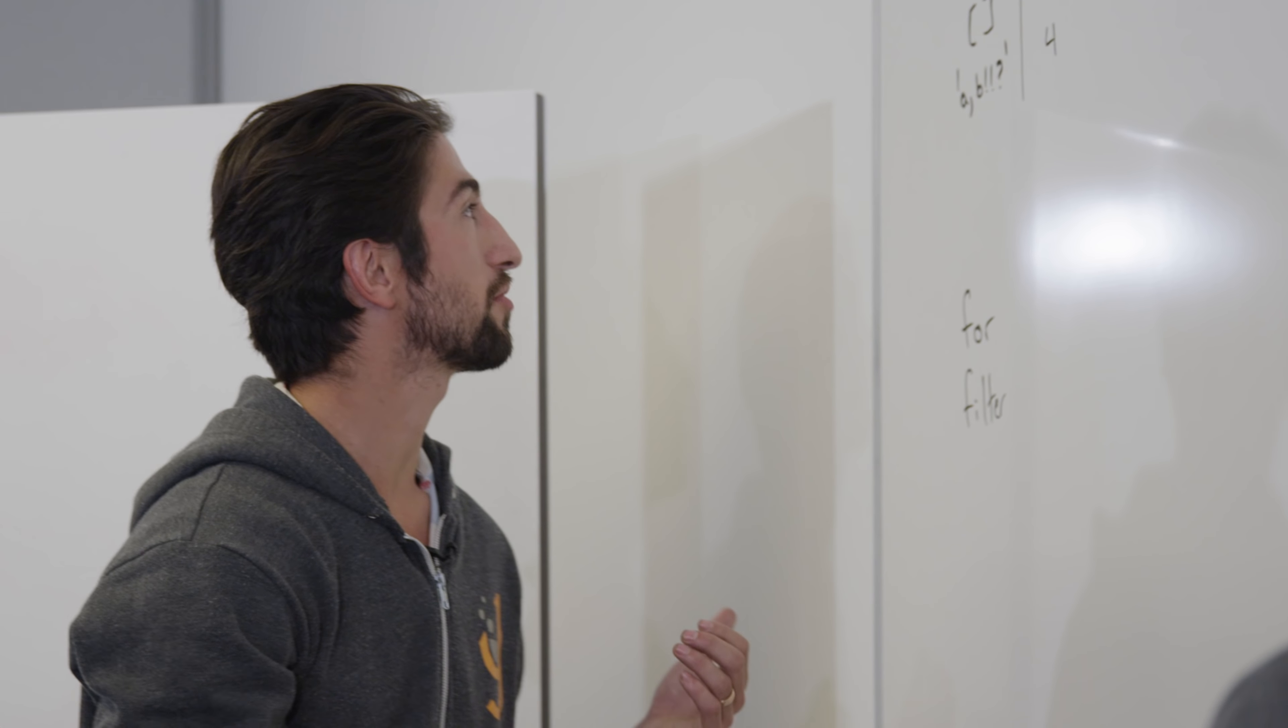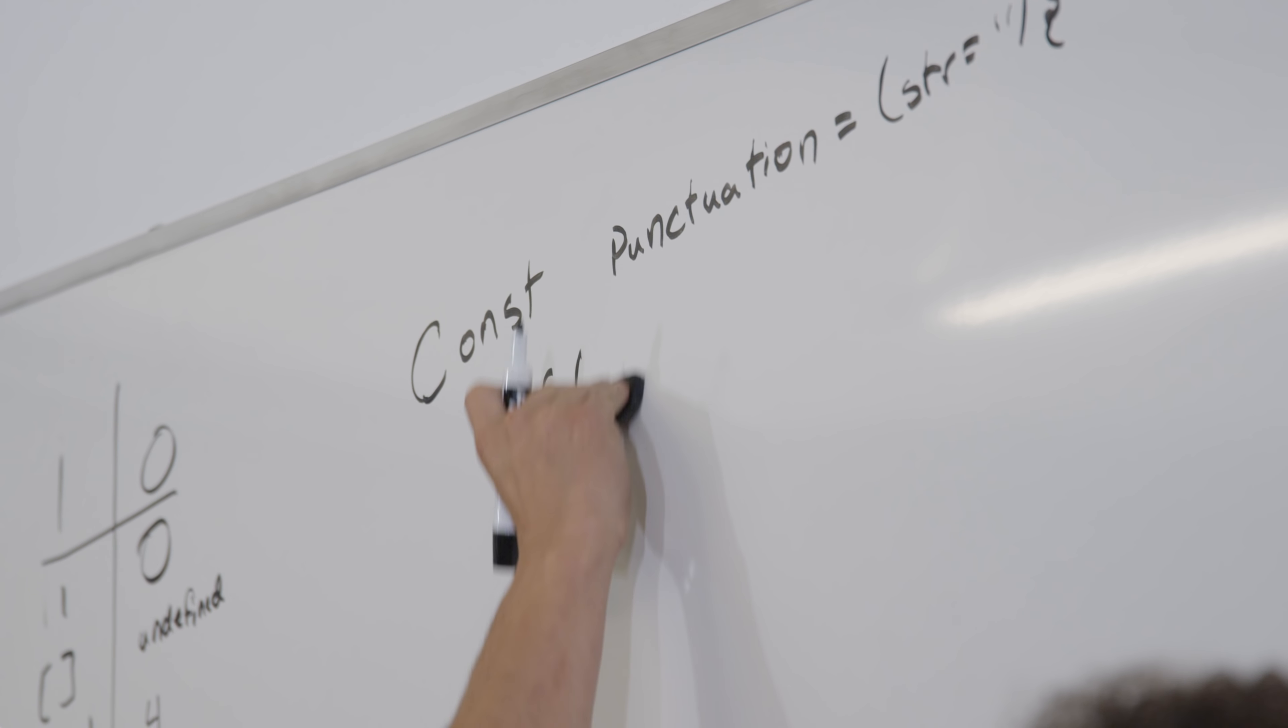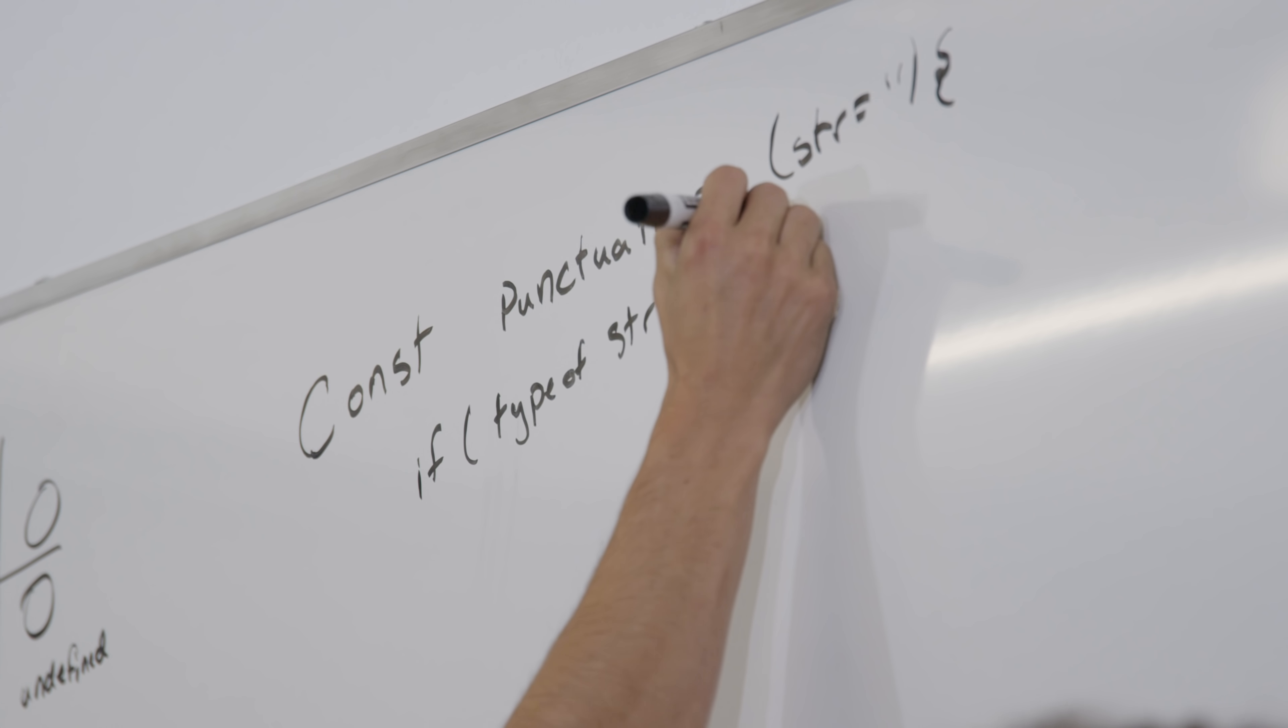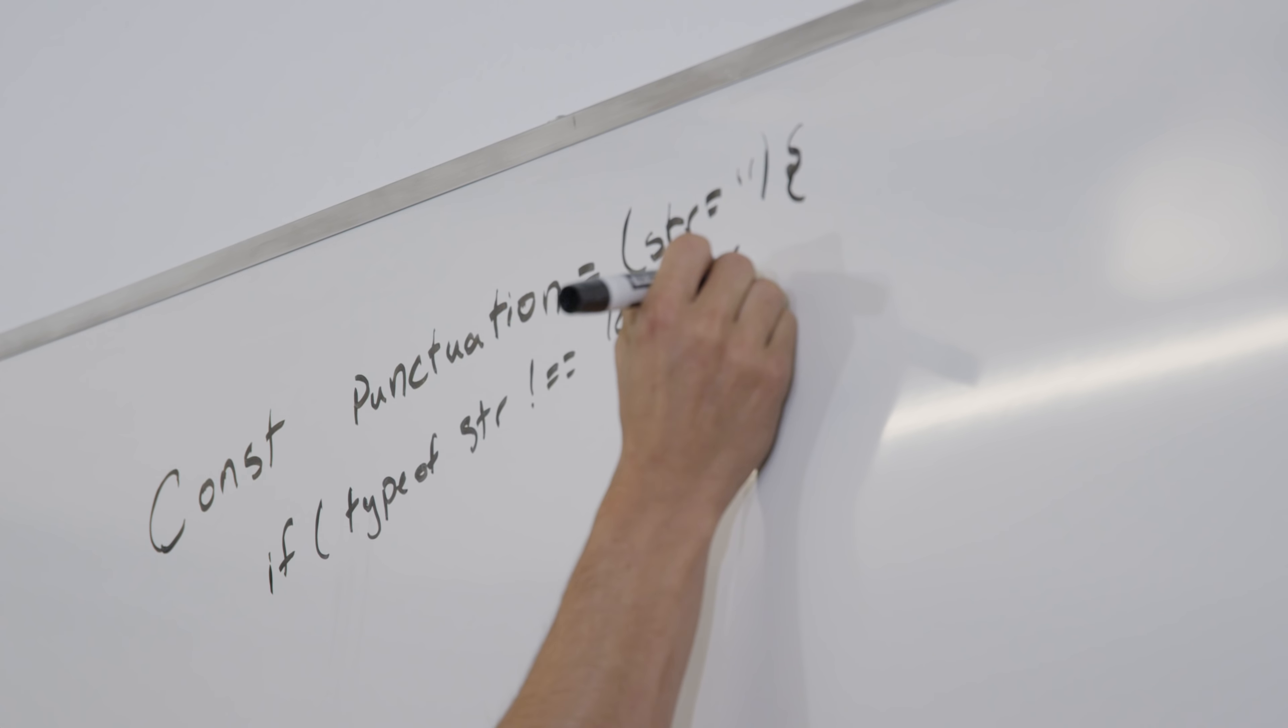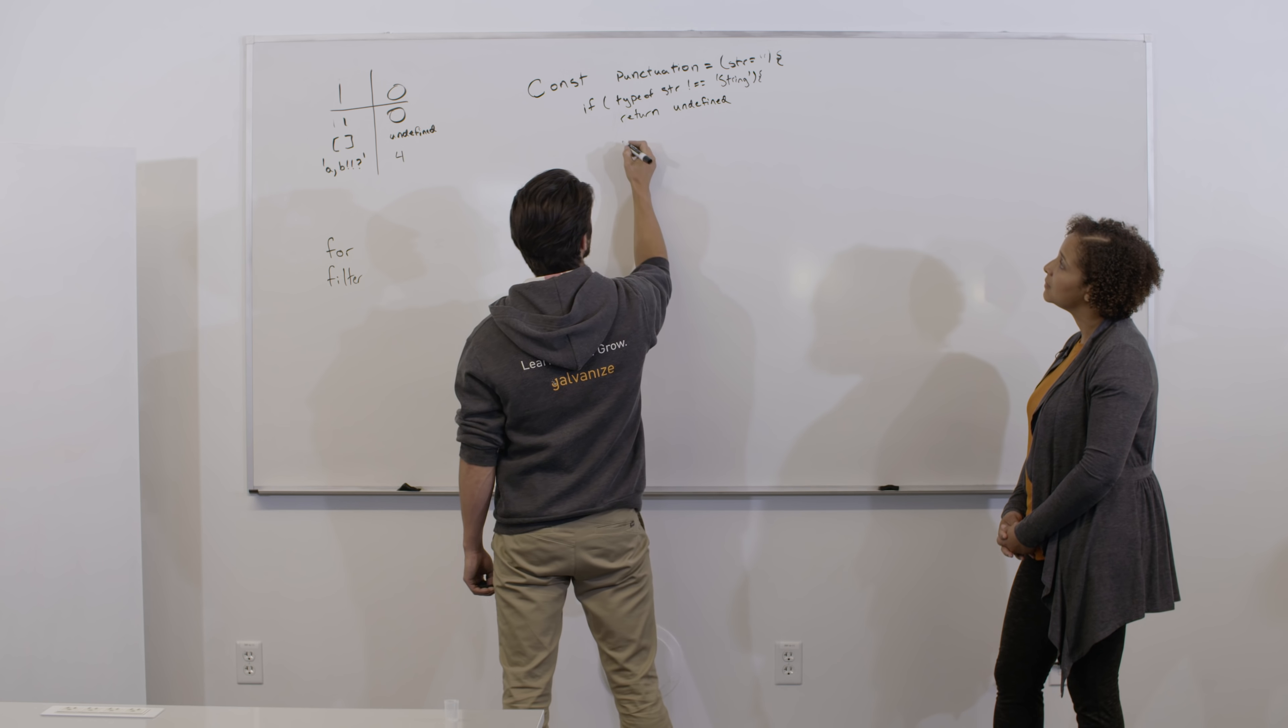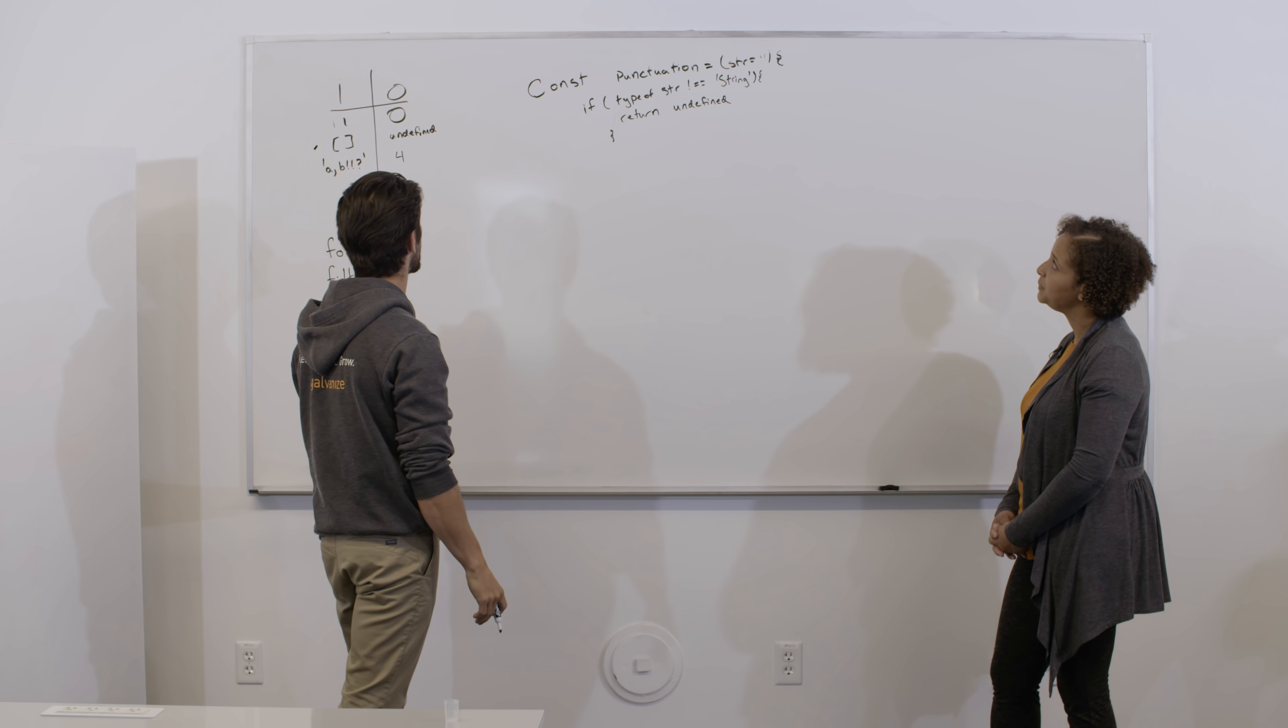So the first thing I want to check for in this that might break it is if it's not the right type. So what I'll do is I'll say, if STR, and this is the value that's being passed in, if the type of STR is unequal to string, then what I want to do is return undefined. So if the type of STR is unequal to string, then what I want to do is return undefined. And so that's just taking care of that first case here, that if I'm given something that's not a string, it's going to return undefined.